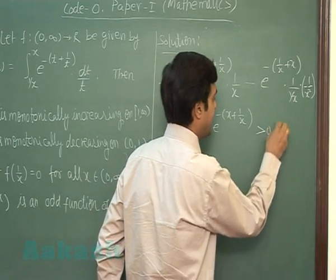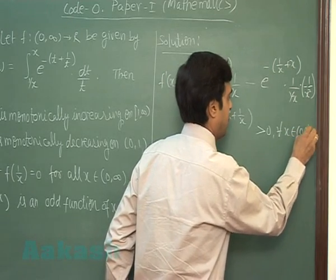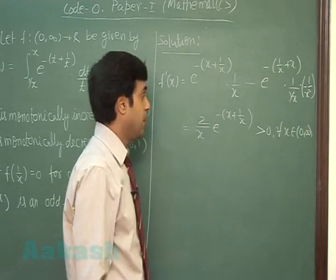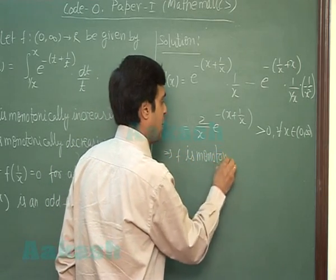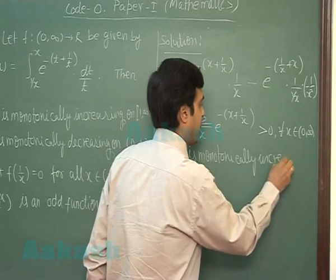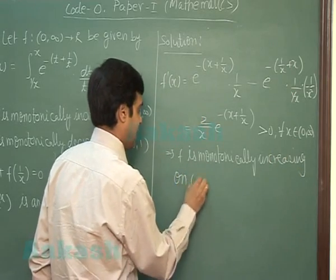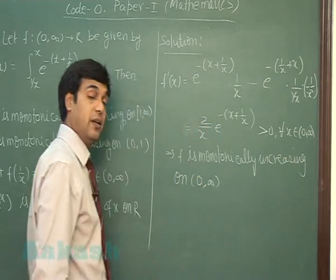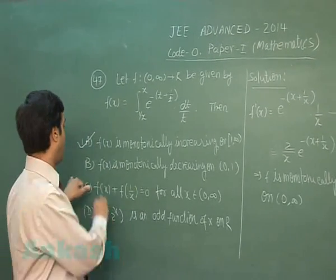Correct, means f is monotonically increasing on (0,∞). Hence option 1 is correct while 2 is false.